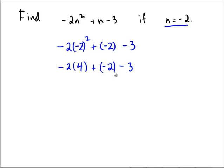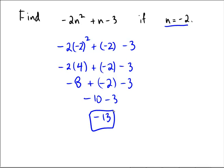Order of operations says we're going to have to do the negative 2 times 4 first. So that would be negative 8 plus negative 2 minus 3. Now, negative 8 plus a negative 2 would be negative 10 minus 3. So the final answer we're expecting looks like a negative 13.